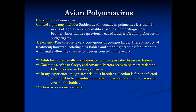In budgerigars, this used to be called budgie fledgling disease — birds develop very abnormal feathers they'll have for life. There is a vaccine available. What we've found is that older birds catch the virus, don't get sick, but carry the disease back to young birds in nest boxes. The adults are asymptomatic; all the babies die.